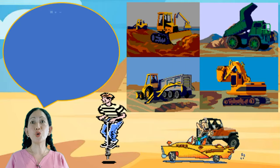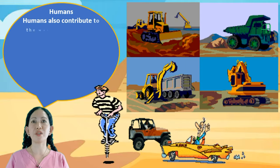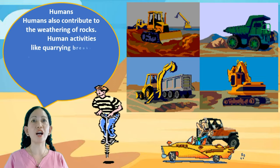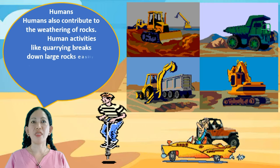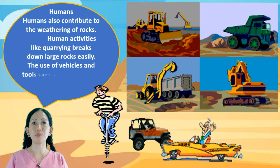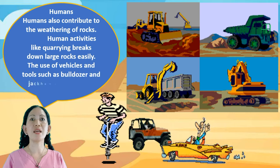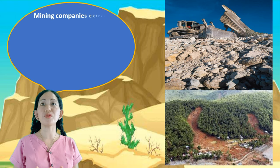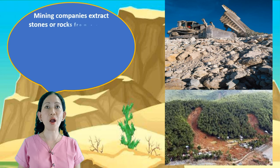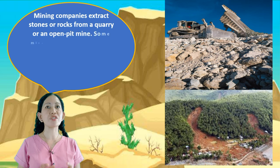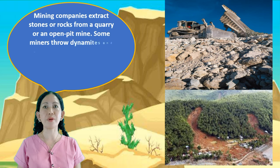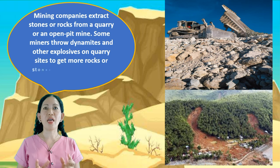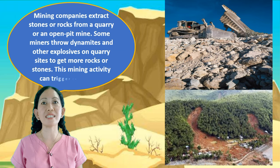Humans also contribute to the weathering of rocks. Human activities like quarrying break down large rocks easily. The use of vehicles and tools such as bulldozers and jackhammers can break rocks with ease. Mining companies extract stones or rocks from a quarry or open pit mine. Some miners throw dynamites and other explosives on quarry sites to get more rocks, and this mining activity can trigger landslides.